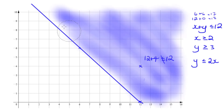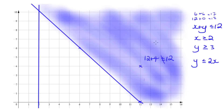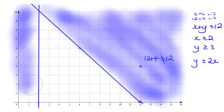The next inequality is x is greater than or equal to 2. For any line in the form x equals something, it's going to be a vertical line at that value. Here x is 2, so it's a vertical line right here. Since x must be greater than or equal to 2, the unwanted region is where x is less than 2 — that's to the left of the line, where all the x values are less than 2.